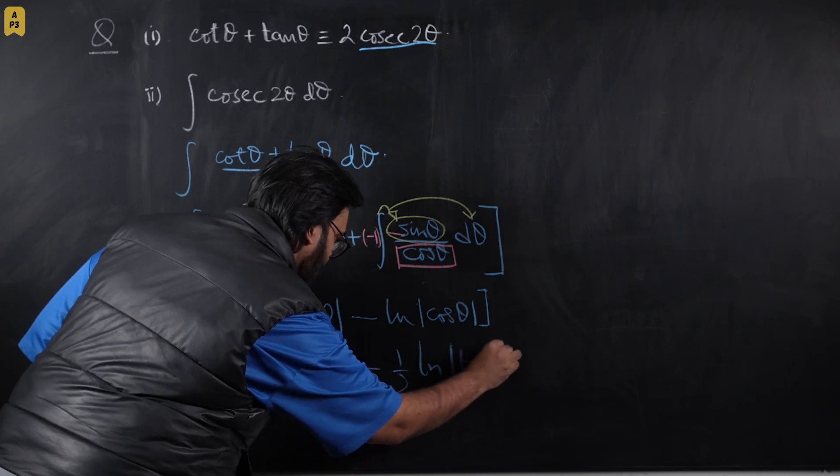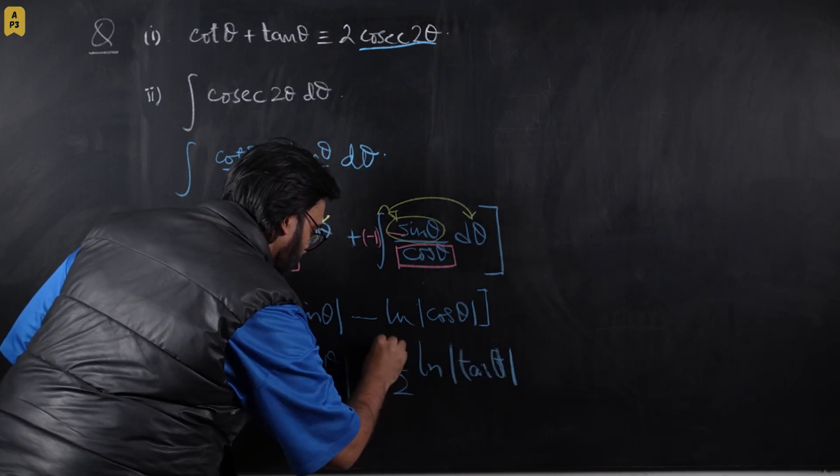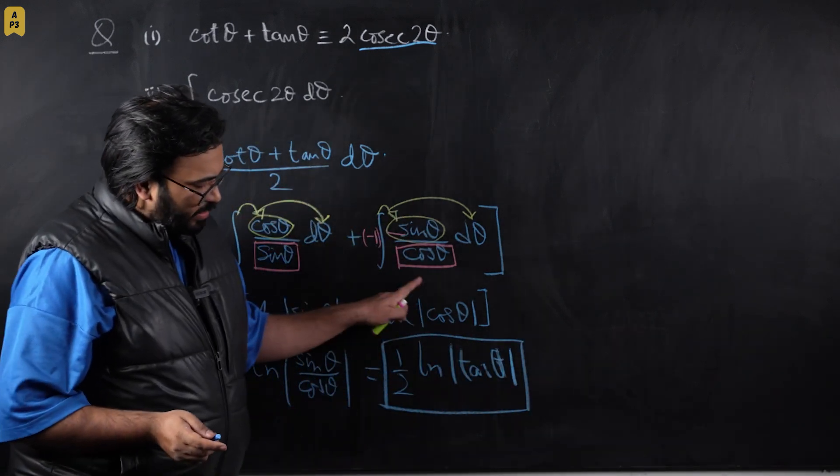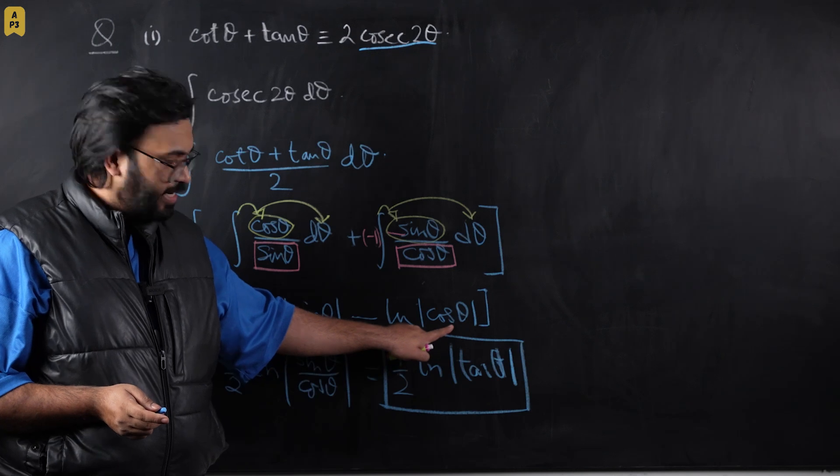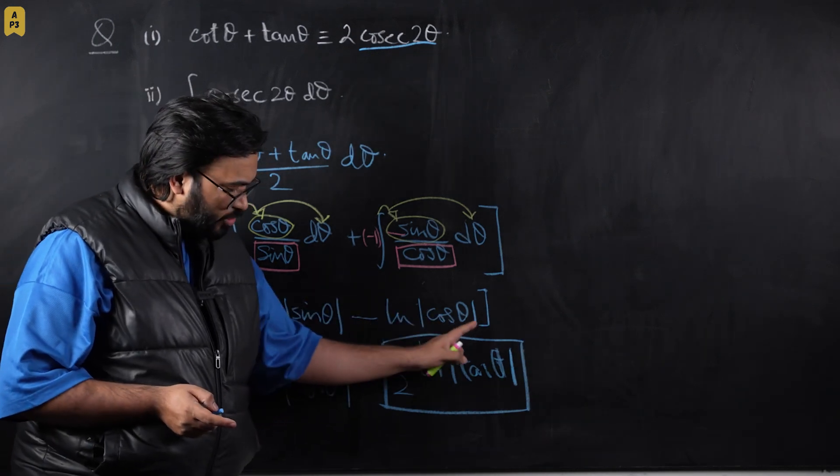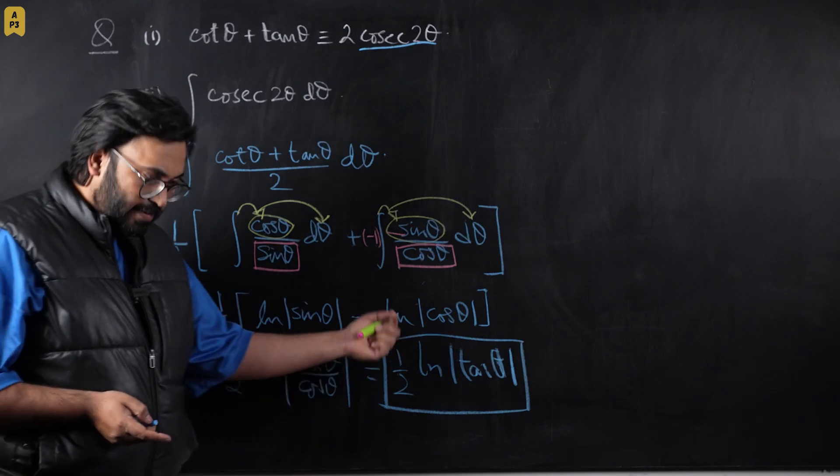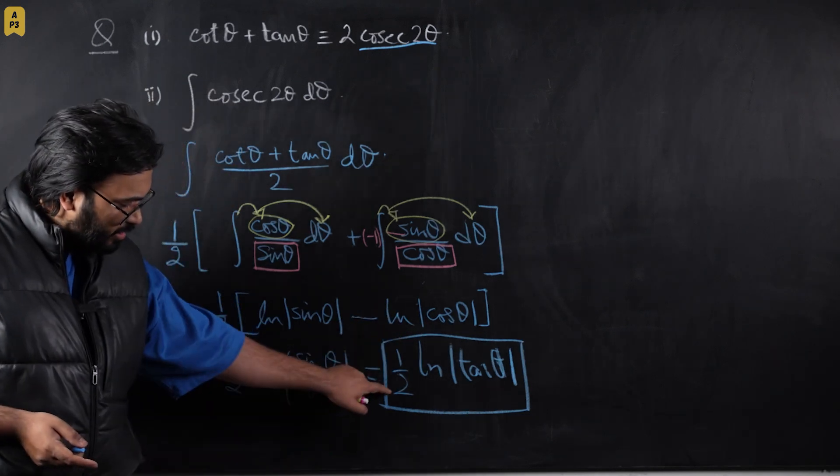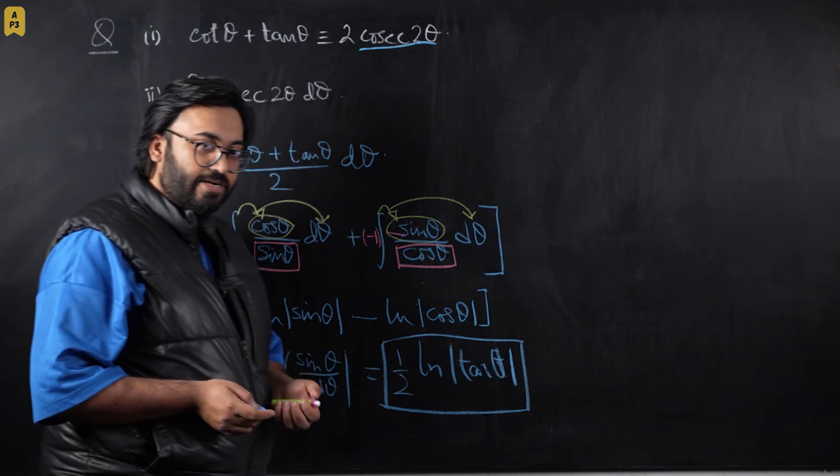And again I'm using modulus symbols because all the trigonometric functions are usually positive for the half cycle and negative for the half cycle. For the negative half cycle we have to use the absolute function to keep it positive so that the argument of a logarithm does not go negative. This is the final answer for this integration.